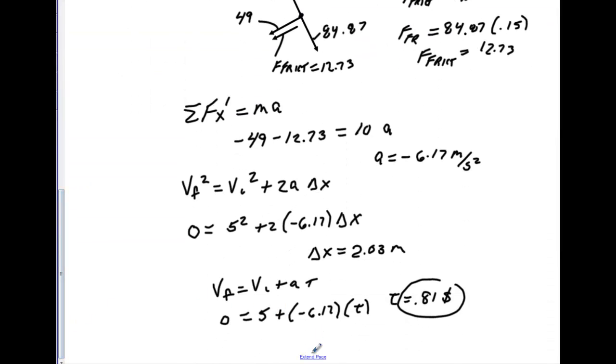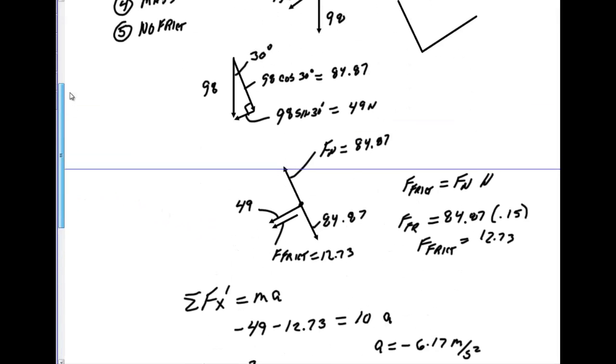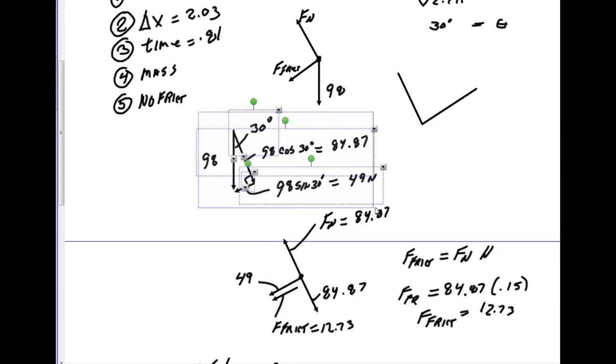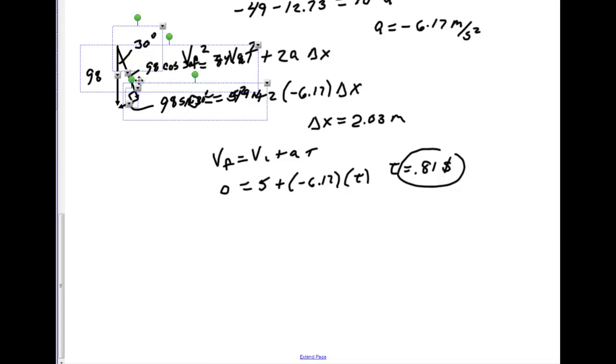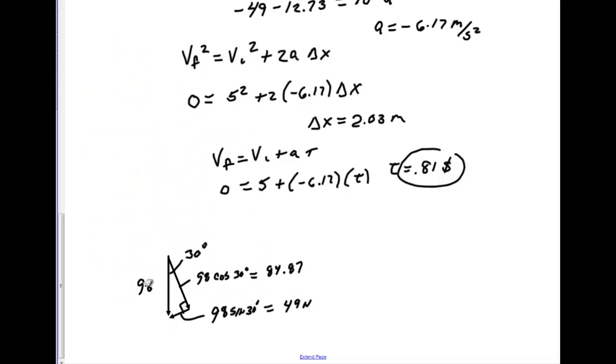Next problem. Our question says, does mass make a difference? Well, let's go back here and draw this free body diagram. If you take mass out, then this would just become mass times 9.8. This would become mass times 9.8 cosine 30. This would just be mass times 9.8 sine 30. Now we'll go back through. We'll just figure out what our friction was.